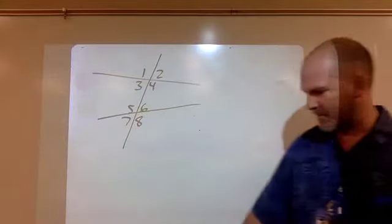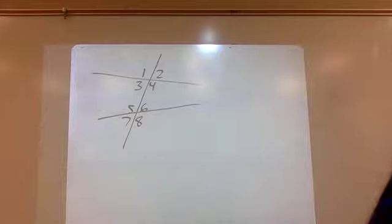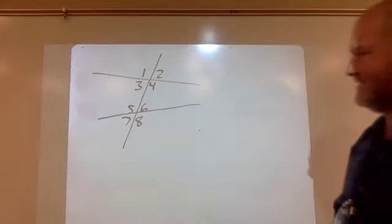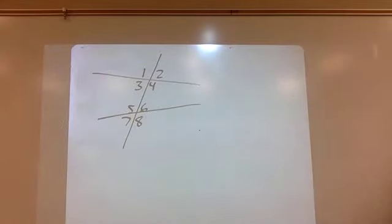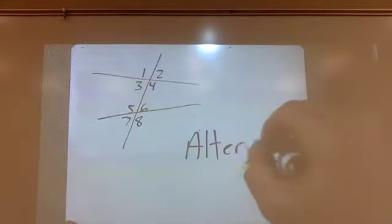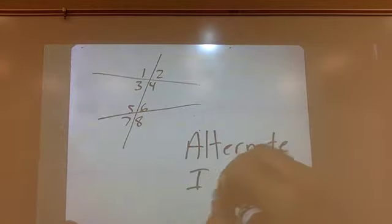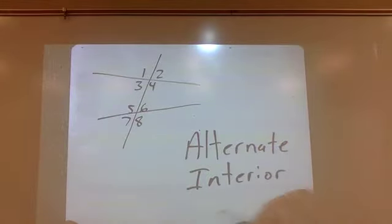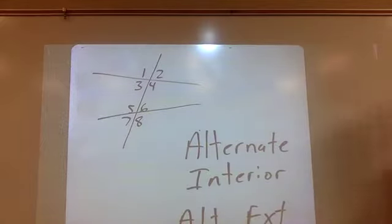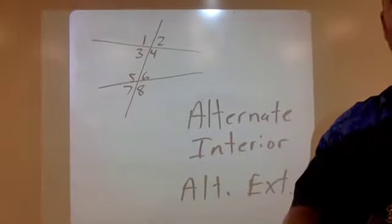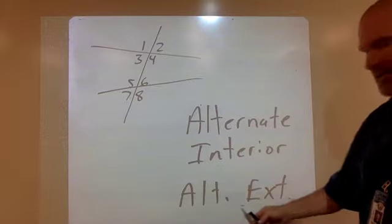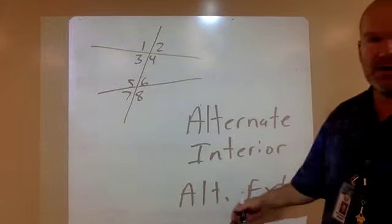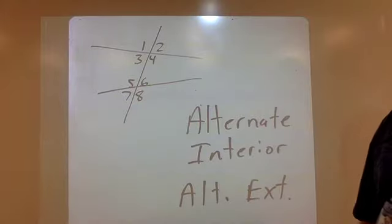Welcome to standard number four of geometry. This one is a little bit vocabulary intensive. You're going to have to learn what things like alternate interior angles mean. There's also alternate exterior — I've abbreviated that: ALT for alternate, EXT for exterior. So you've got interior and exterior with the word alternate in front of each.